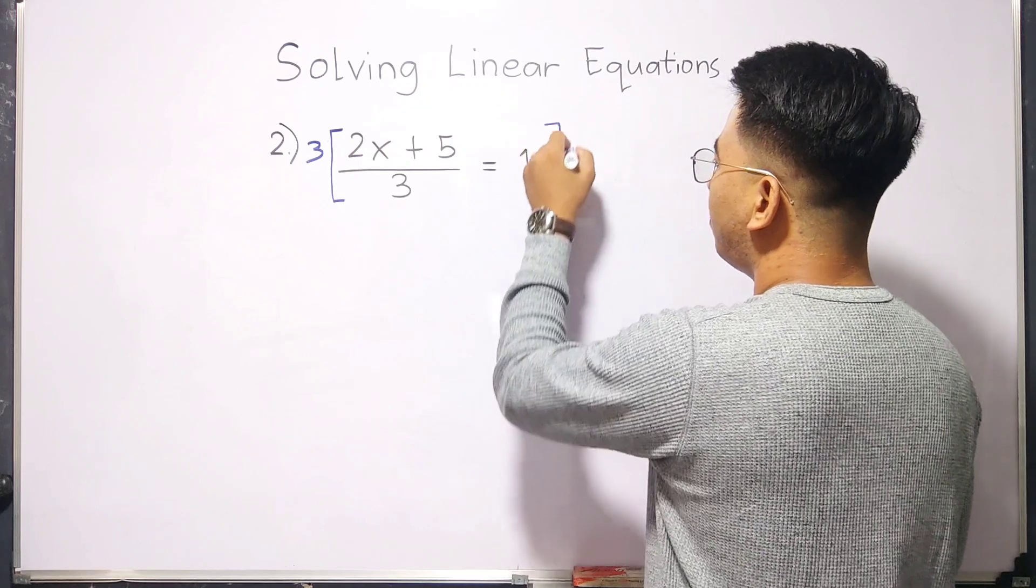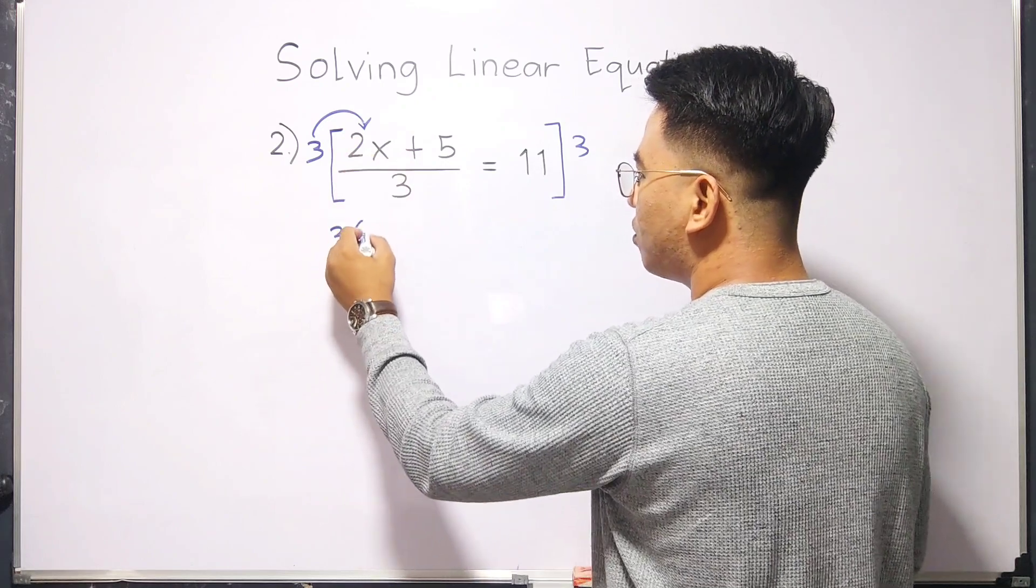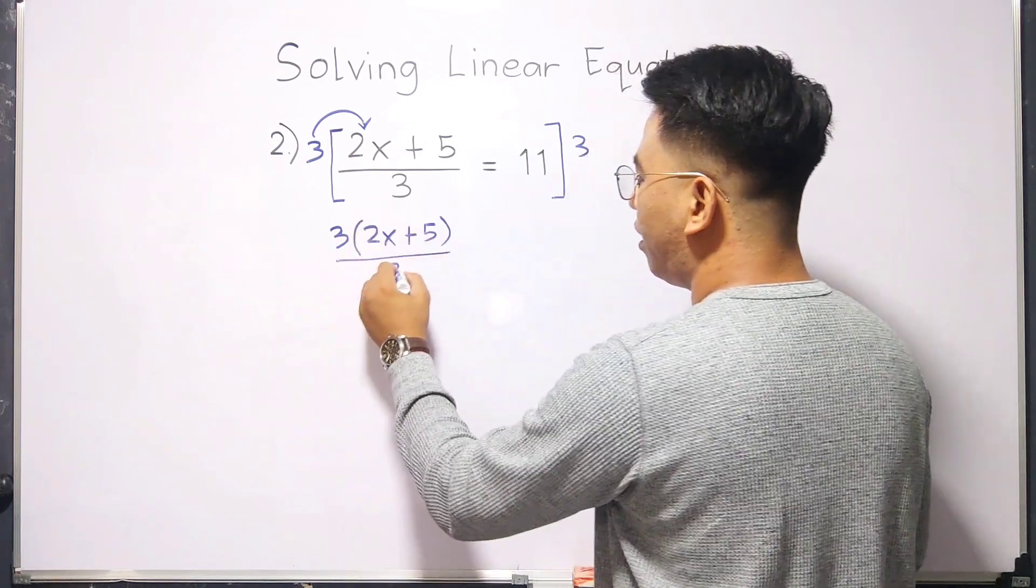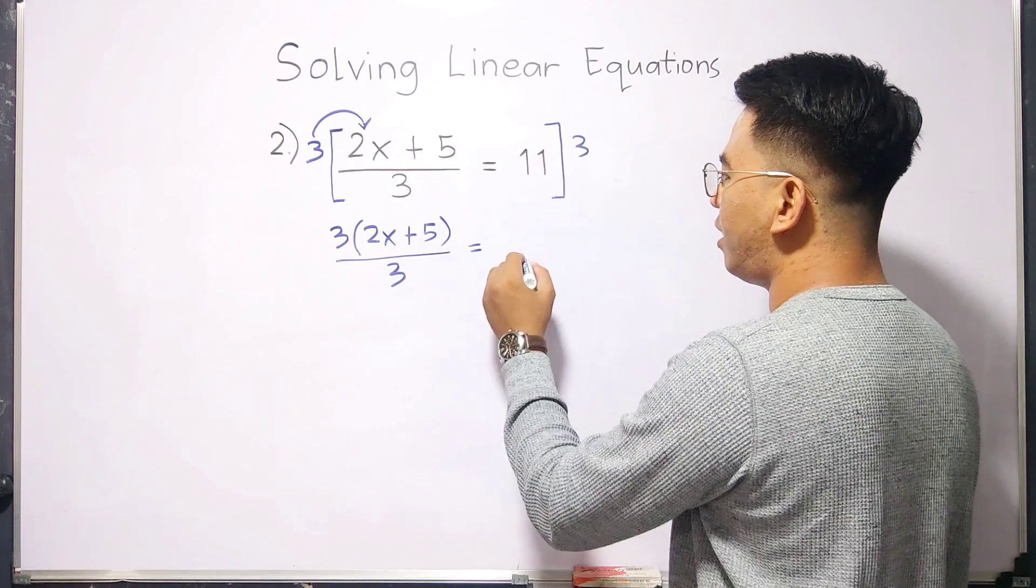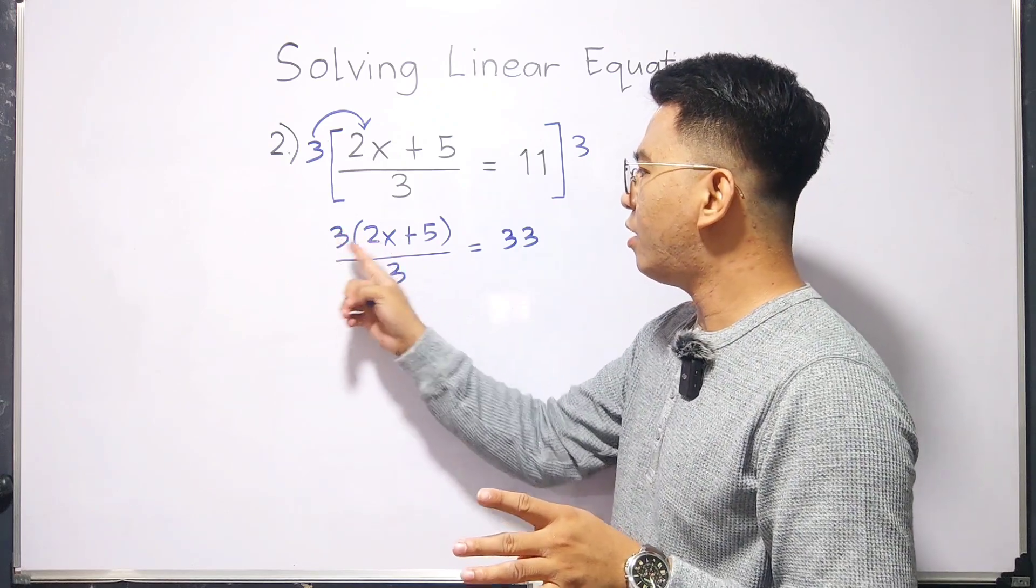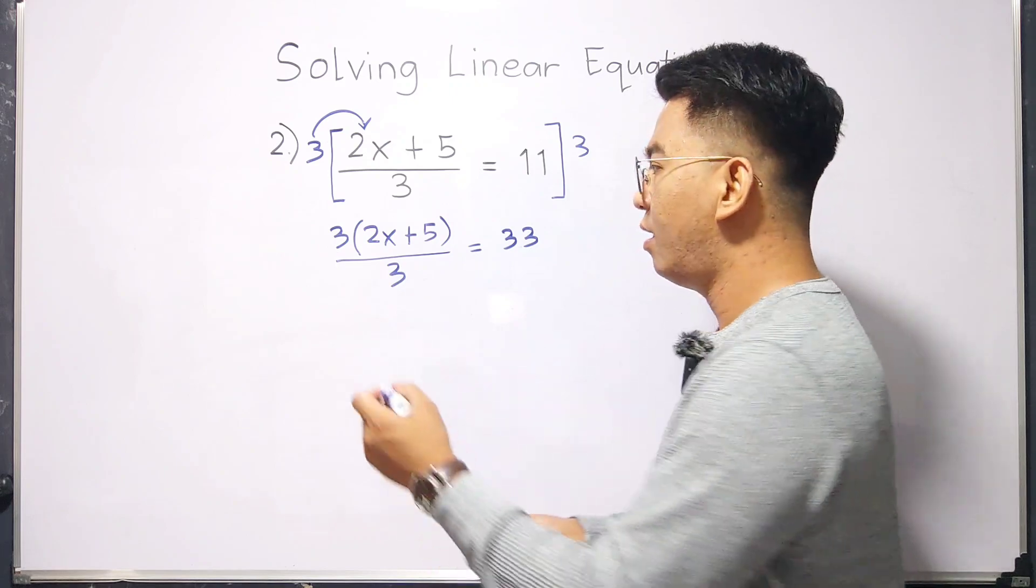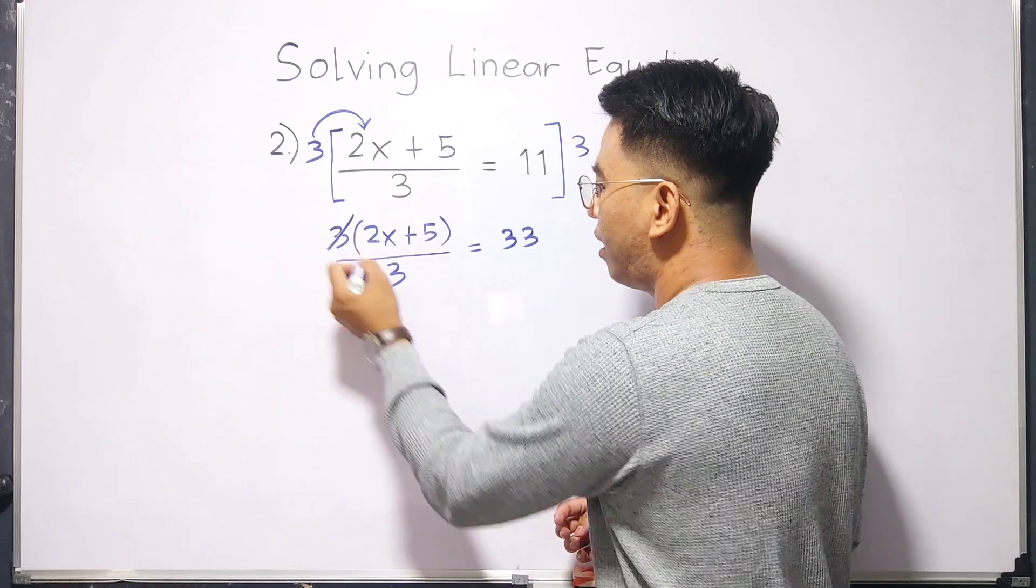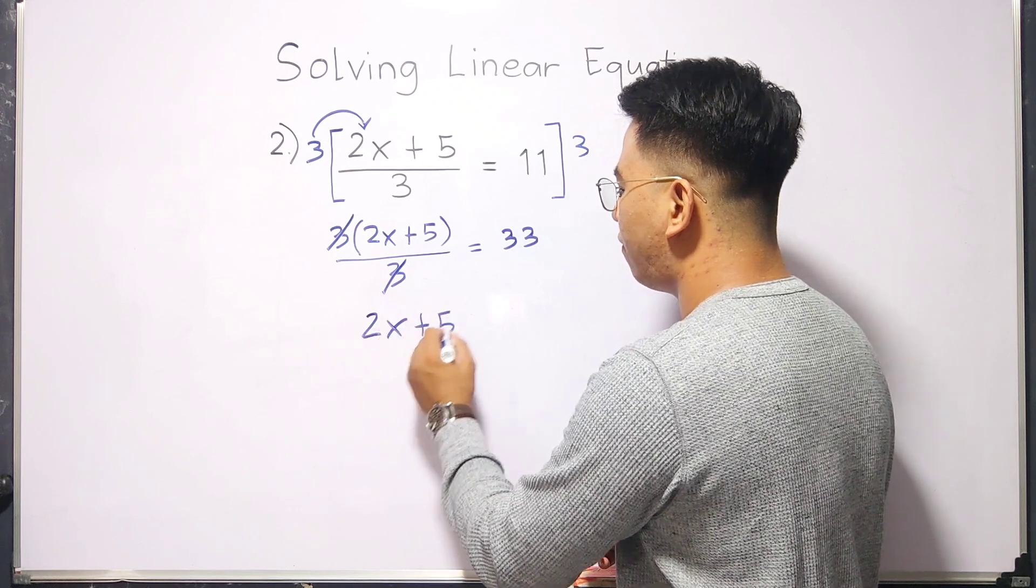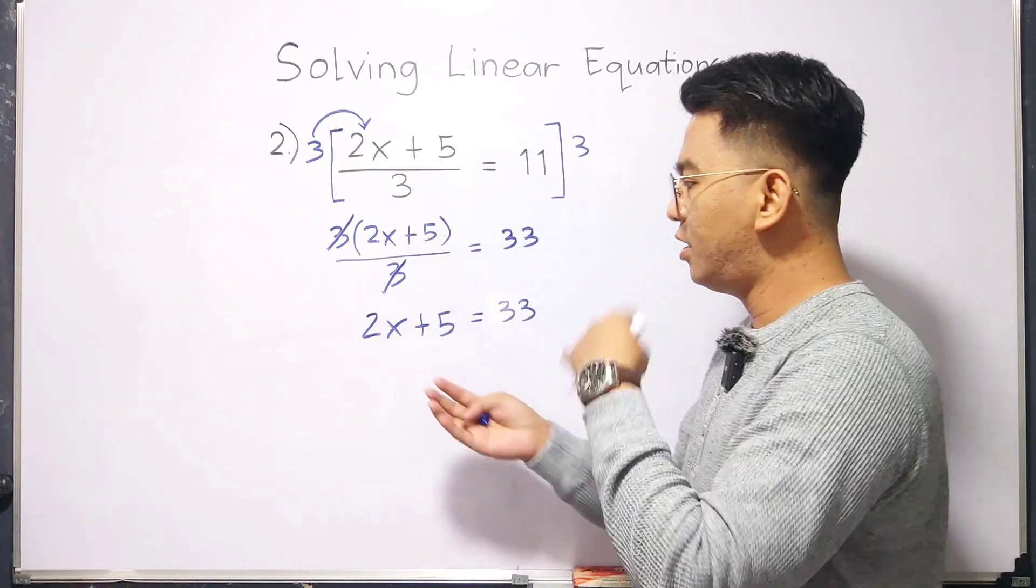The whole equation by 3. In this case, it will become 3 times 2x plus 5 over 3. And on the other side, this is 11 times 3, that is equal to 33. Now, if you're going to multiply 3, 2x plus 5, it's not bad, but what is the best way to simplify this one is to just eliminate 3 and 3. And what you have here is simply 2x plus 5 is equal to 33.